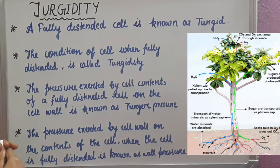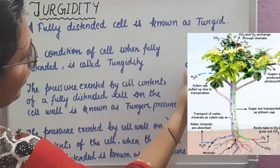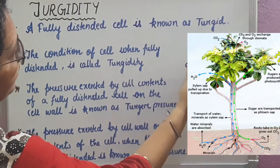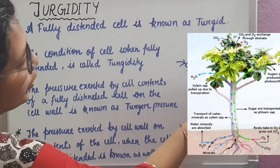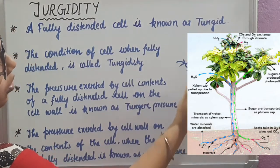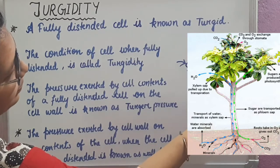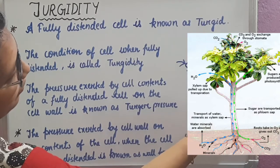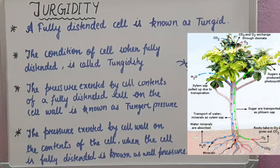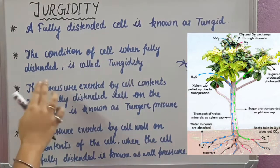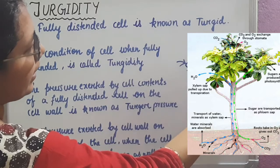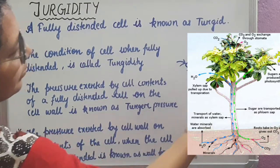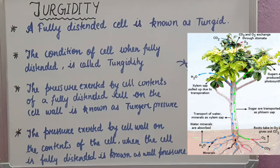When water enters the cell, it grows in size — this is called a turgid cell. A fully distended cell is known as turgid. The condition of a cell when fully distended is called turgidity. The cell is called a turgid cell and the condition is called turgidity.